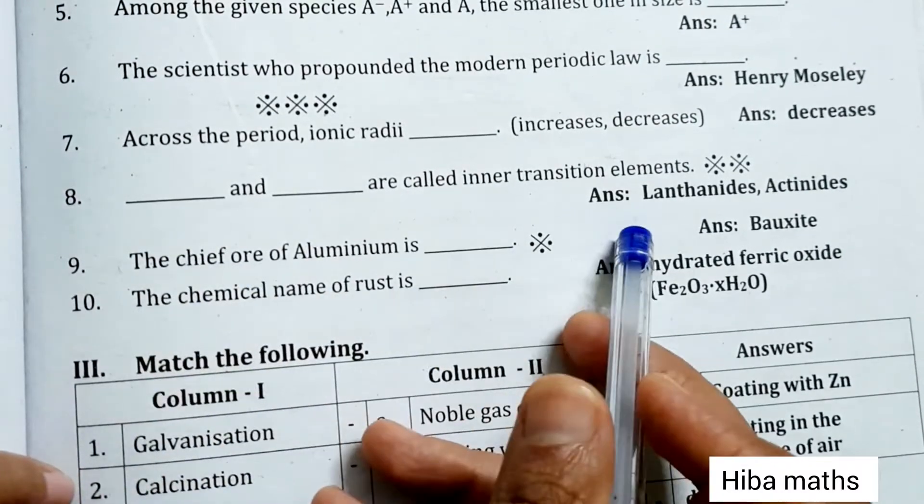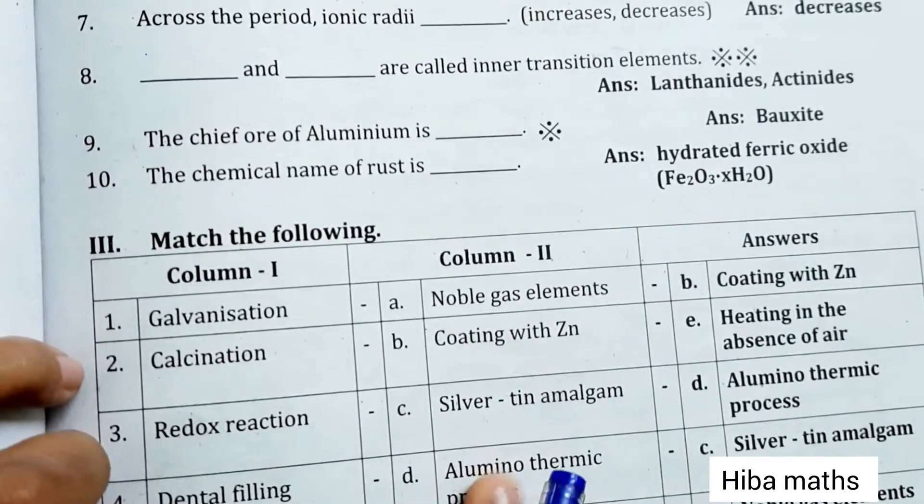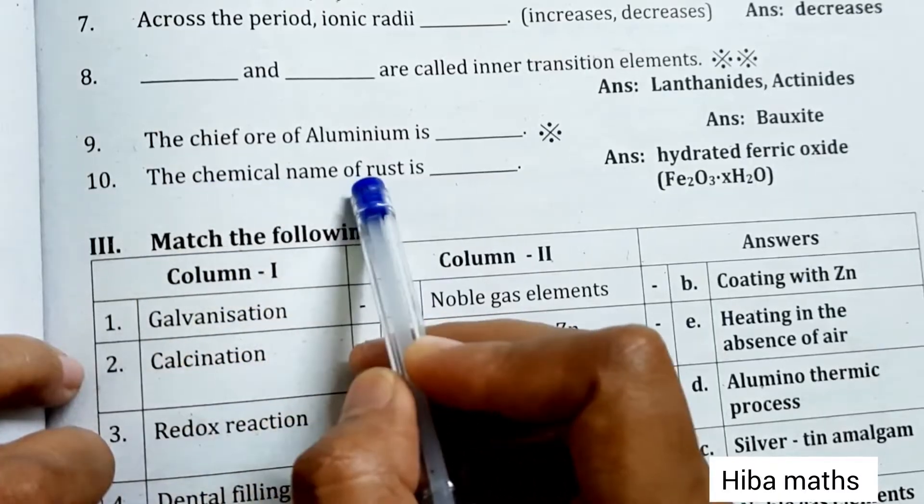Lanthanides and actinides are called the inner transition elements. The chief ore of aluminum is bauxite. The chemical name of rust is hydrated ferric oxide.